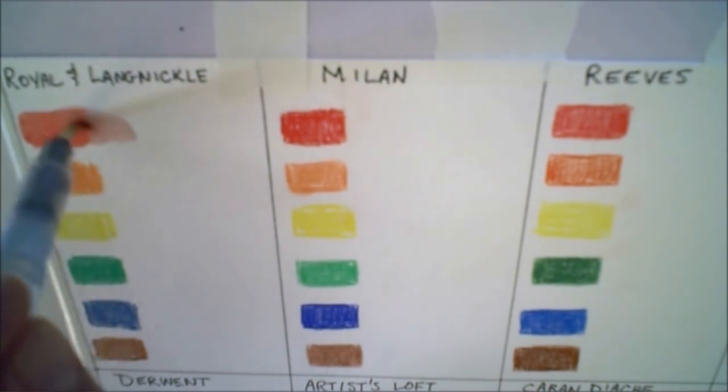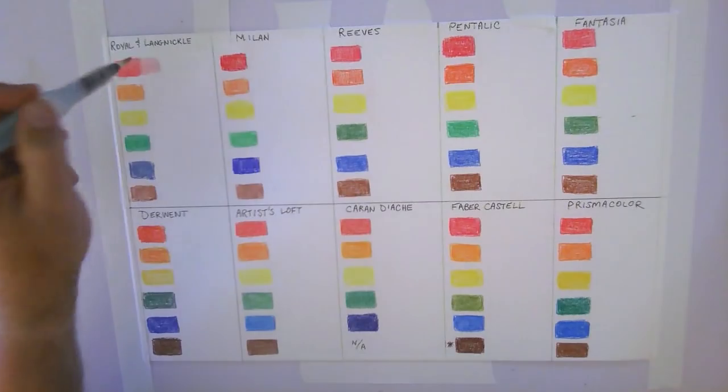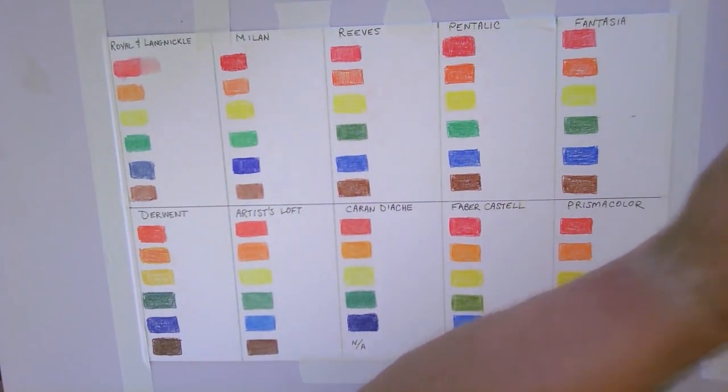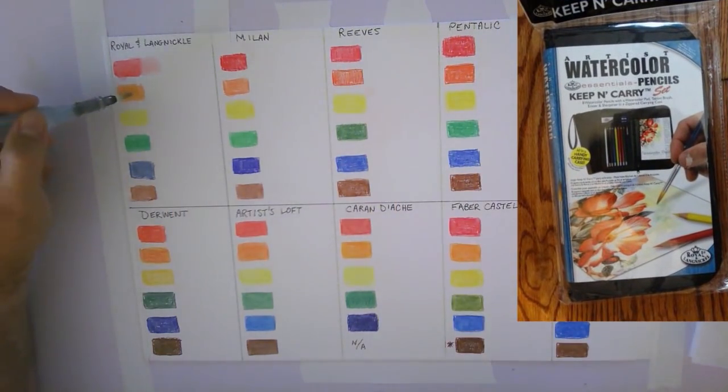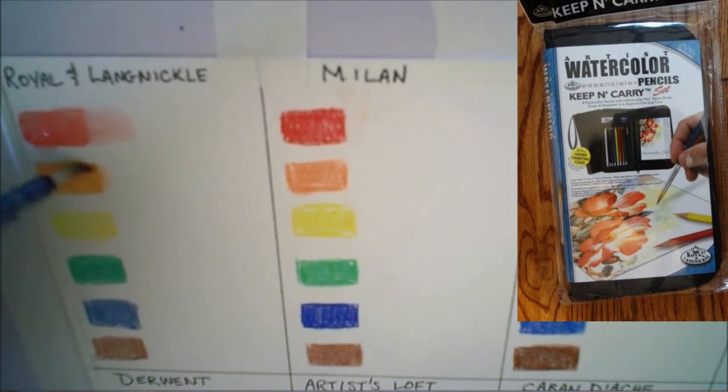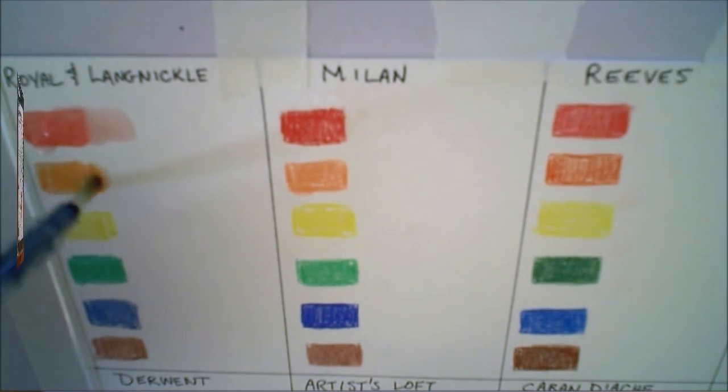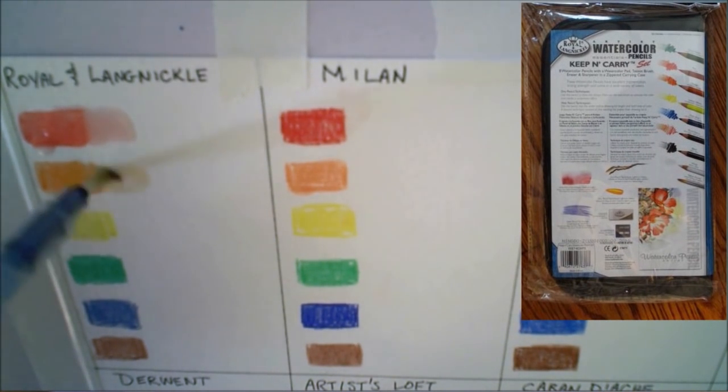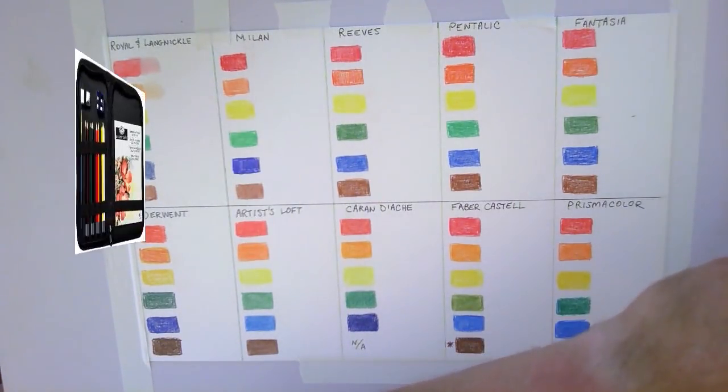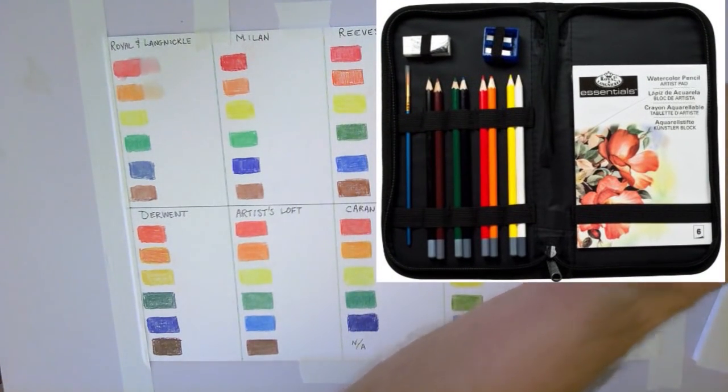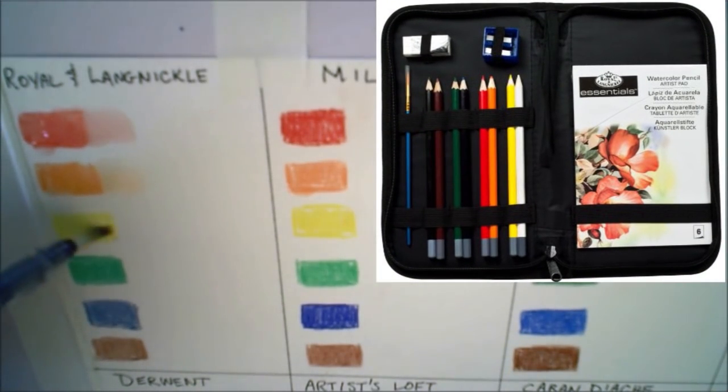First up here is the offering from Royal and Langnickel. This is actually the first watercolor pencil kit that I had purchased. I liked the idea of a travel case that I could take with me that contained everything I needed except the water, so that I could park myself on a bench or under a tree somewhere and do some outdoor sketching. As seen in these images, it looked pretty inviting, showcasing some rich looking colors that can be used to create some beautiful pictures. On the inside of the case are eight watercolor pencils, one black, one white, and six colors. It's the selection of these colors that I base my comparisons on in this demo.